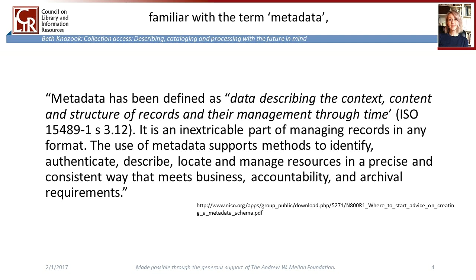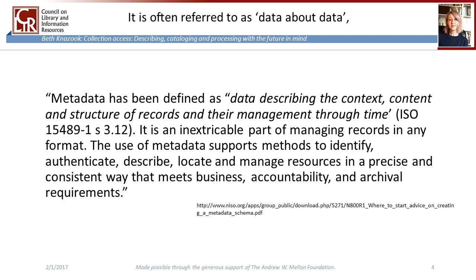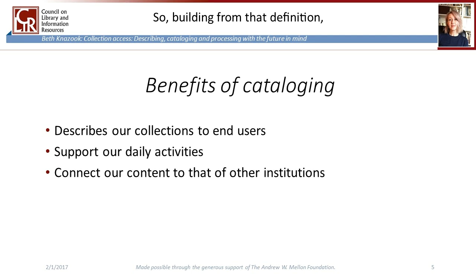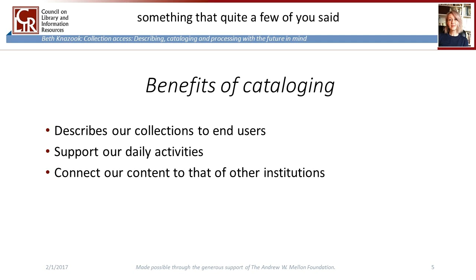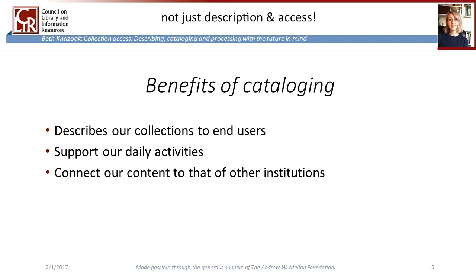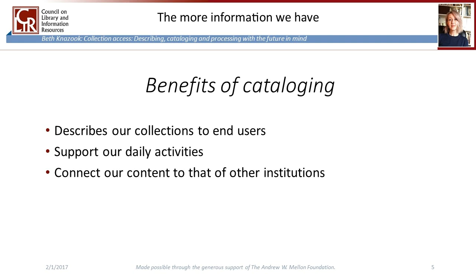For those of you who are not familiar with the term metadata, this refers to all the data that we generate in the course of our work. It is often referred to as data about data, or as defined by the International Standards Organization, data describing the context, content, and structure of records and their management through time. Building from that definition, we can extrapolate some of the major benefits of cataloging. Firstly, it describes our collections to our end users — it is an access tool and often an interpretive tool. Increasingly, online metadata is replacing in-person interactions with our collections. Secondly, it supports our daily activities as an administrative tool. It helps us organize our materials, monitor them, and generally take better care of them. The more information we have about our collections, the more easily we can identify issues, seek conservation treatments, or adapt procedures. We are not truly accountable for our collections if we don't keep records.